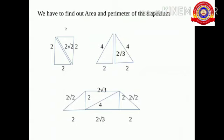The sides of the square are 2 centimeters and the diagonal is 2 root 2. In the triangle, the sides are twice that of the square, therefore 4 centimeters, and the perpendicular height is 2 root 3 centimeters.